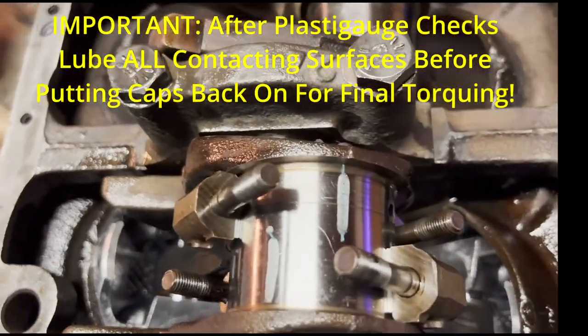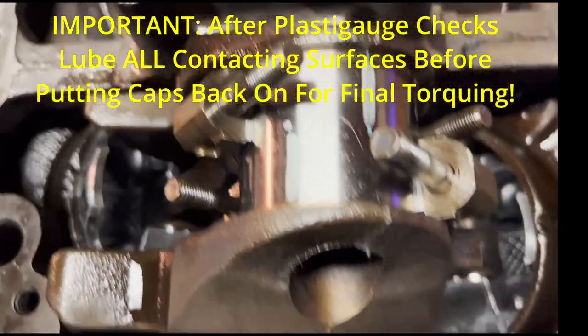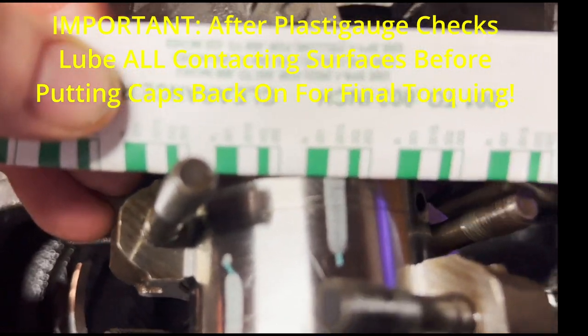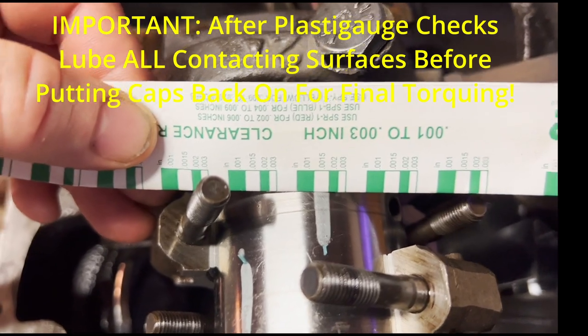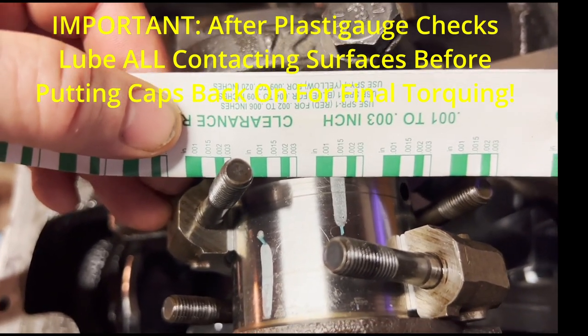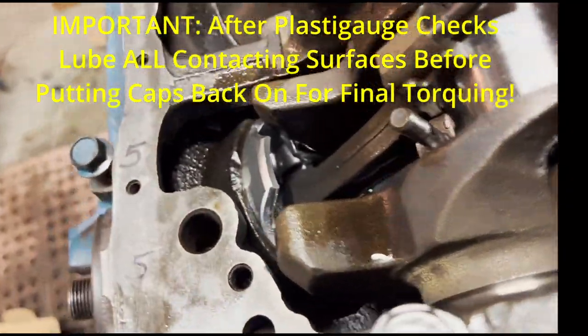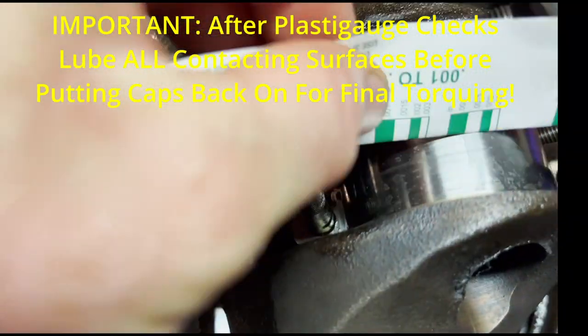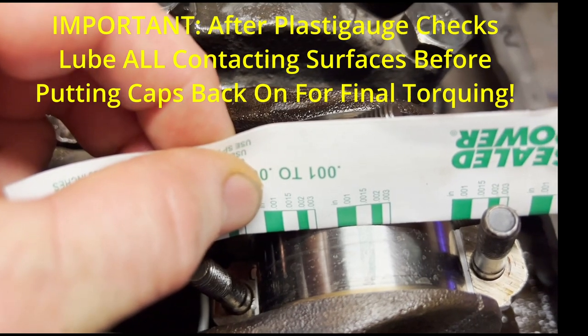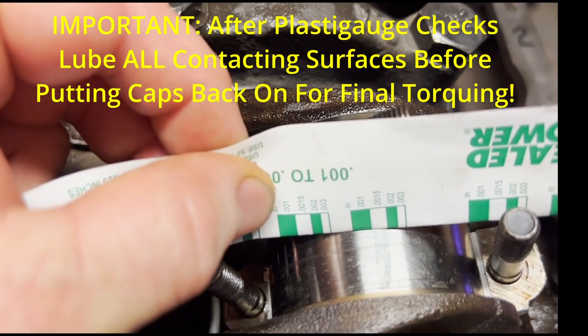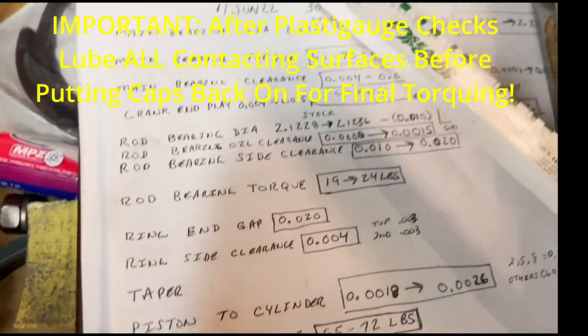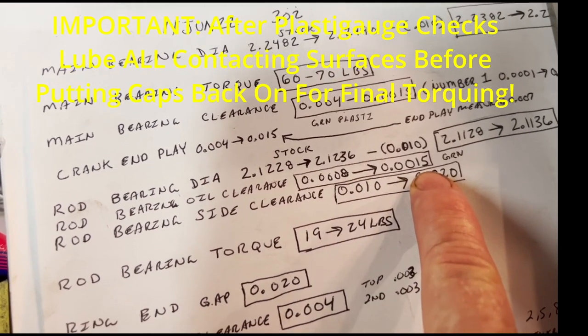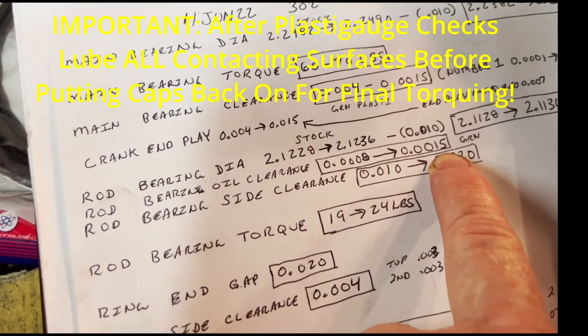Did manage to get two pistons in and clearances look pretty good. Let's see here. So where are we? Let's see. There we are. One and a half thousands, 0.0015. That's on number five. And we should be doing the same thing here on number one. And we are for oil clearance, 0.008 to one and a half.